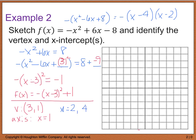Graphing everything: the vertex is at 3, 1, the axis of symmetry is x equals 3, and the x-intercepts are at 2, 0 and 4, 0. I have a negative coefficient in front of x squared, which confirms the parabola opens downward. Plotting these points confirms what we would have anticipated. This wraps up example 2.